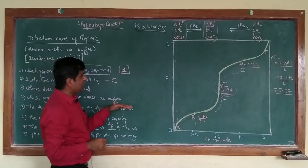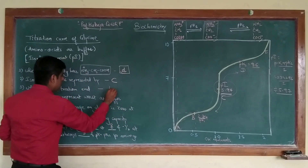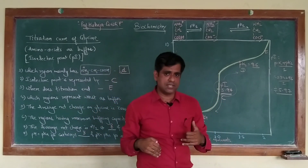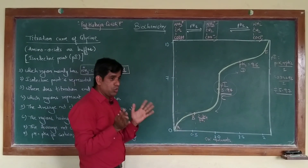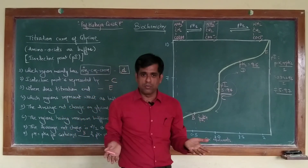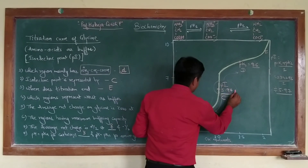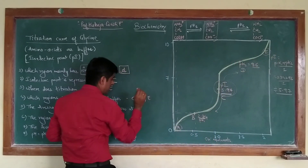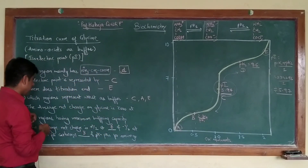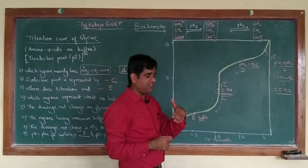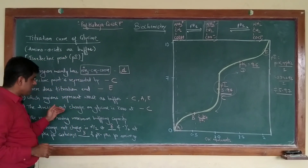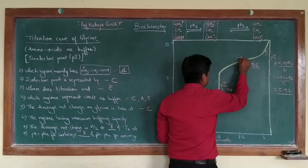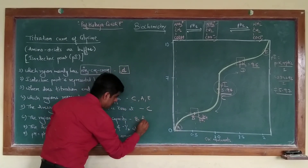The titration ends at point E. The worst buffering regions are where only one form of the amino acid is present — at point C, and also at points A and E, because there are no alternative forms of that particular amino acid present. The regions with maximum buffering capacity are at points B and D, where you have a 50-50 percent mixture of two forms. The average net charge of glycine is 0 at point C — again, by definition of the isoelectric point.